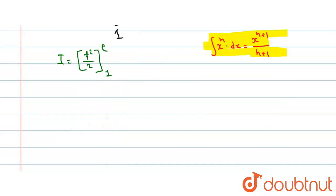Now in the next step, 1 by 2 is a constant, so take it outside. I is equal to 1 upon 2, now t square, so put upper limit minus lower limit. t square means e square minus when we put lower limit we get 1 square which is 1.